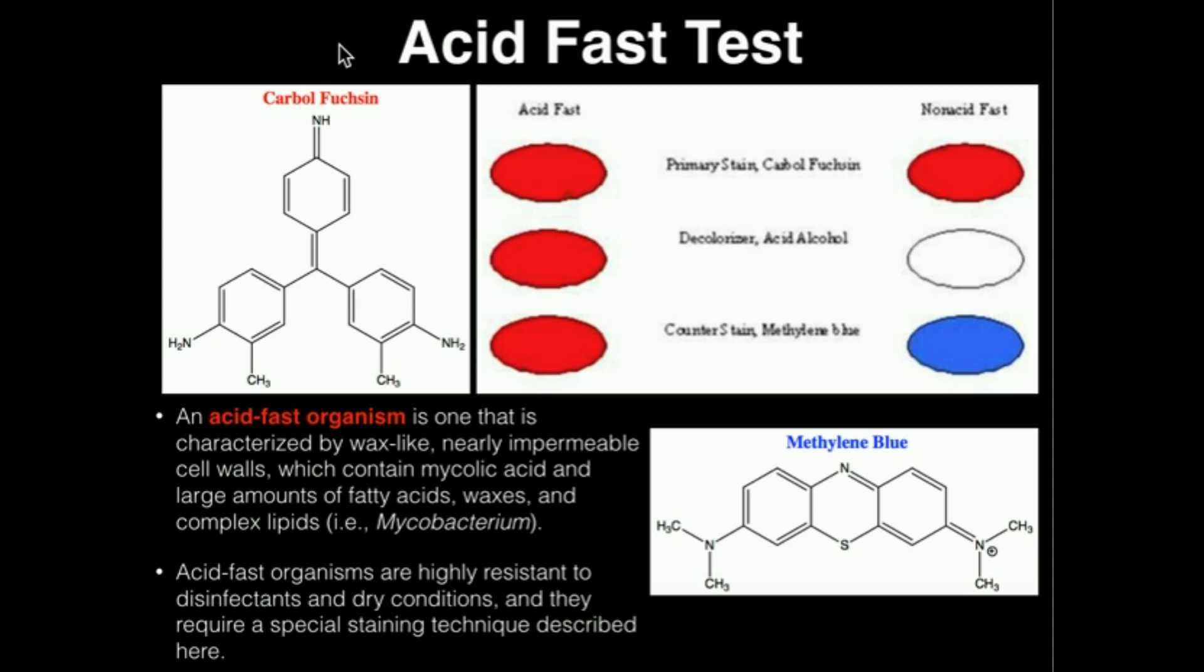And it's important to be able to identify acid-fast organisms because a great example of one is Mycobacterium. Mycobacterium are actually known to cause tuberculosis, which makes this a clinically relevant technique. So acid-fast can be used to identify Mycobacterium, and another example is Nocardia. So potentially pathogenic bacteria.